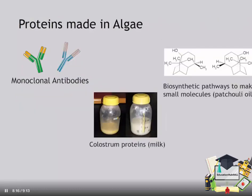To date, multiple proteins have been made in algae, many of which have significant commercial or biomedical applications. For example, monoclonal antibodies have been produced in the algae Chlamydomonas reinhardtii, and these proteins may have significant application to anti-cancer treatment. Additionally, colostrum proteins have been produced — colostrum being the milk that mammals produce in the first few days to weeks after giving birth — including osteopontin, which has been shown to have significant beneficial effects on gut health. We can also express recombinant proteins in algae to construct new biosynthetic pathways, one example being the production of patchouliol, the major component of patchouli oil. Thanks for viewing this overview of molecular biology and biotechnology.